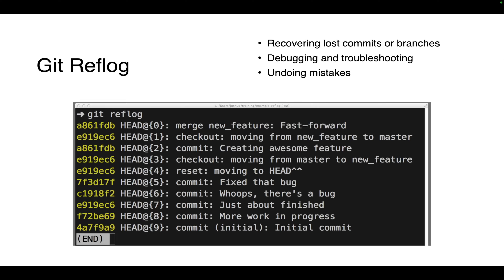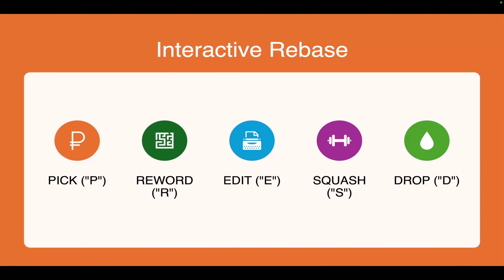Git reflog is a topic that is very powerful but often unexplored. Reflogs are pointers to various objects within the repository — primarily commits, but also tags and branches. They allow users to navigate through the repository timeline and access specific snapshots. Key benefits include: recovering lost commits or branches, debugging and troubleshooting, and undoing mistakes. Reflog essentially holds references to all states of your code base at any particular point in time.